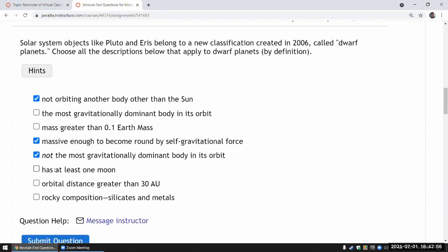Having a moon is not a criteria. It could have a moon, it doesn't have to. Orbital distance doesn't matter. In fact, one of the dwarf planets, Ceres, is in the asteroid belt, which is much closer than this.